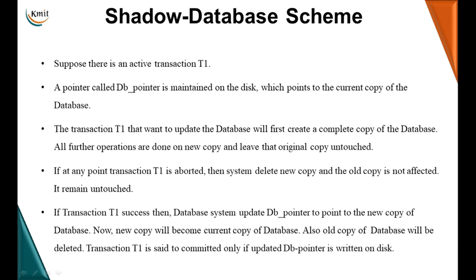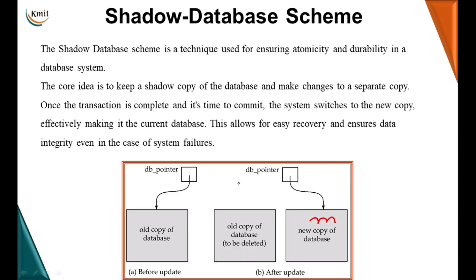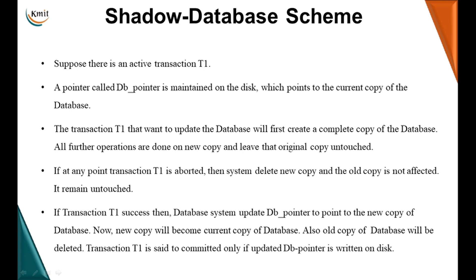If at any point the transaction T1 has to be aborted, the system will delete the new copy and the old copy is not affected at all because it remains untouched. But if the transaction is successful, the database updates the db pointer to point to the new copy. The new copy becomes the current copy and the old copy is discarded. When the transaction is committed, the db pointer is updated and written onto the disk — only then is it considered committed.